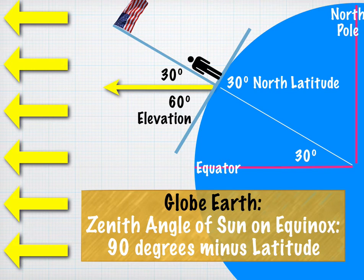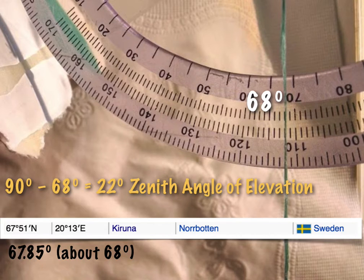On the globe earth, the zenith angle of the sun on the equinox is 90 degrees minus your latitude.